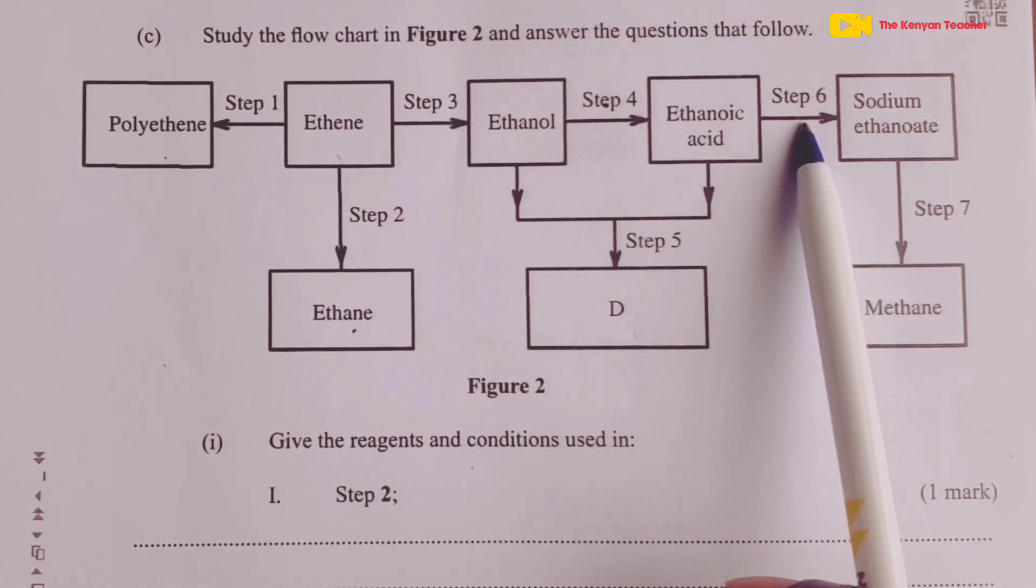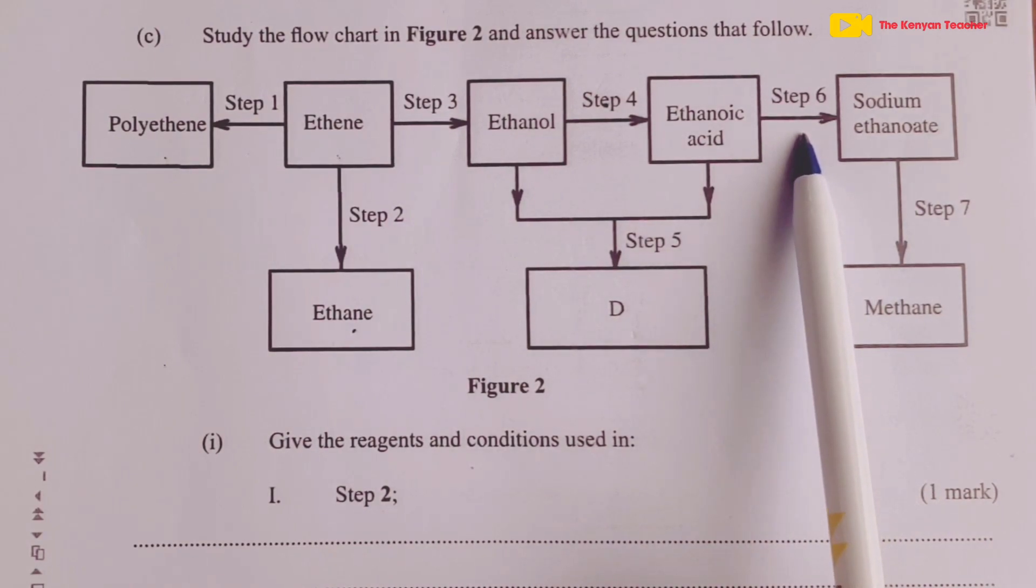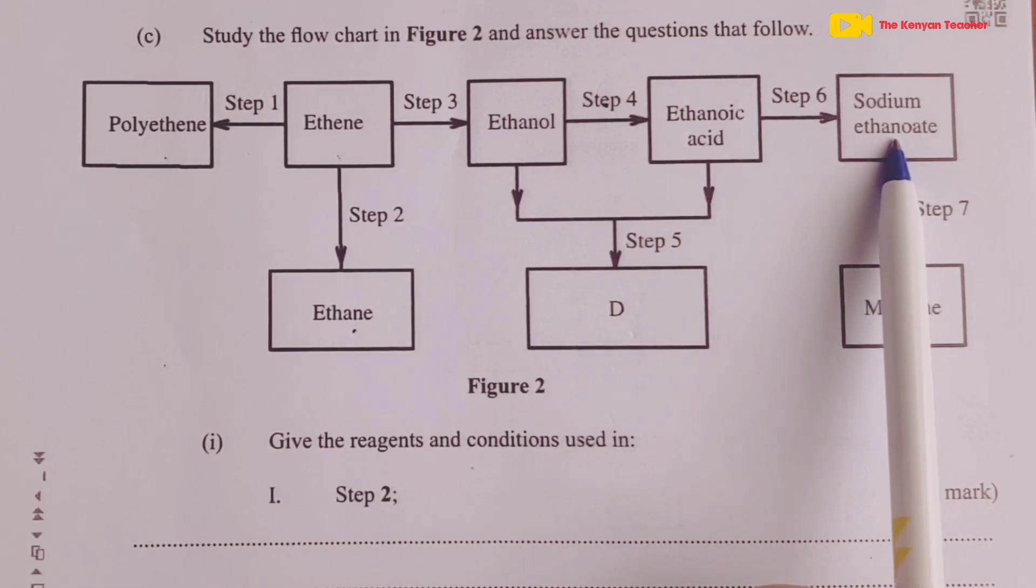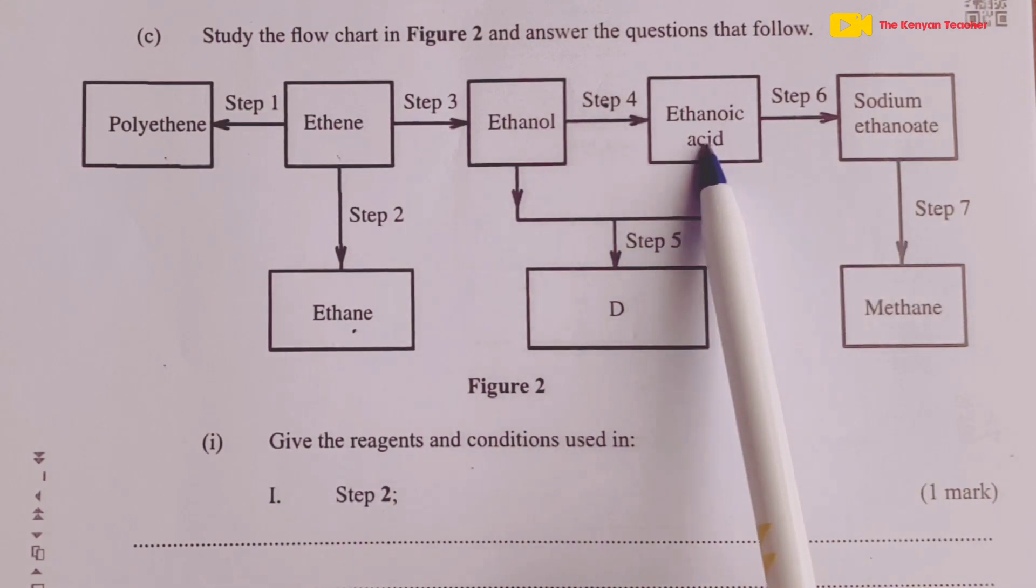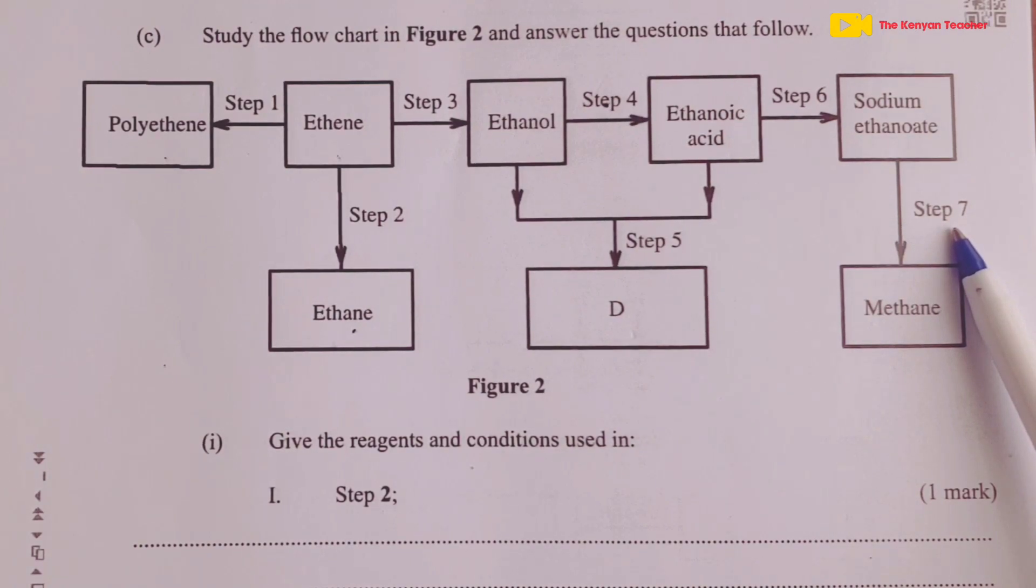In step 6, we are obtaining sodium ethanoate from ethanoic acid, so here we can introduce an alkali sodium hydroxide to give that salt, or we can use sodium as a metal with the acid to give us the salt sodium ethanoate. From sodium ethanoate, we obtain methane in step 7. What is missing here is soda lime. Don't forget, soda lime is a mixture of sodium hydroxide and calcium oxide. We've now studied our scheme very well and are ready to answer our questions.